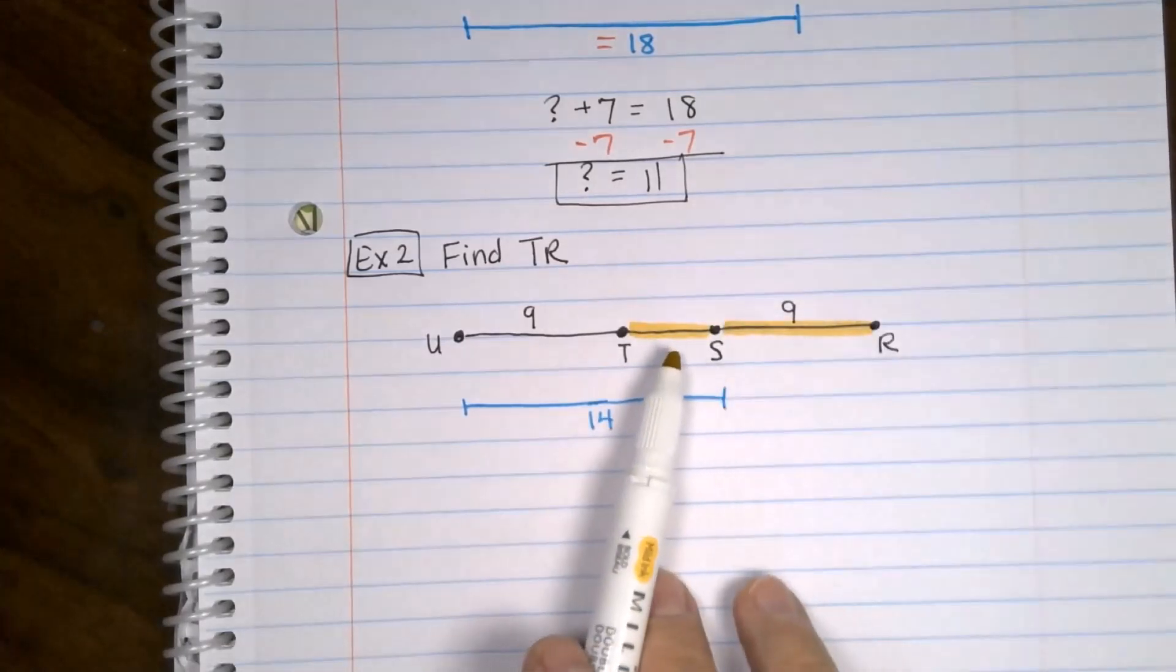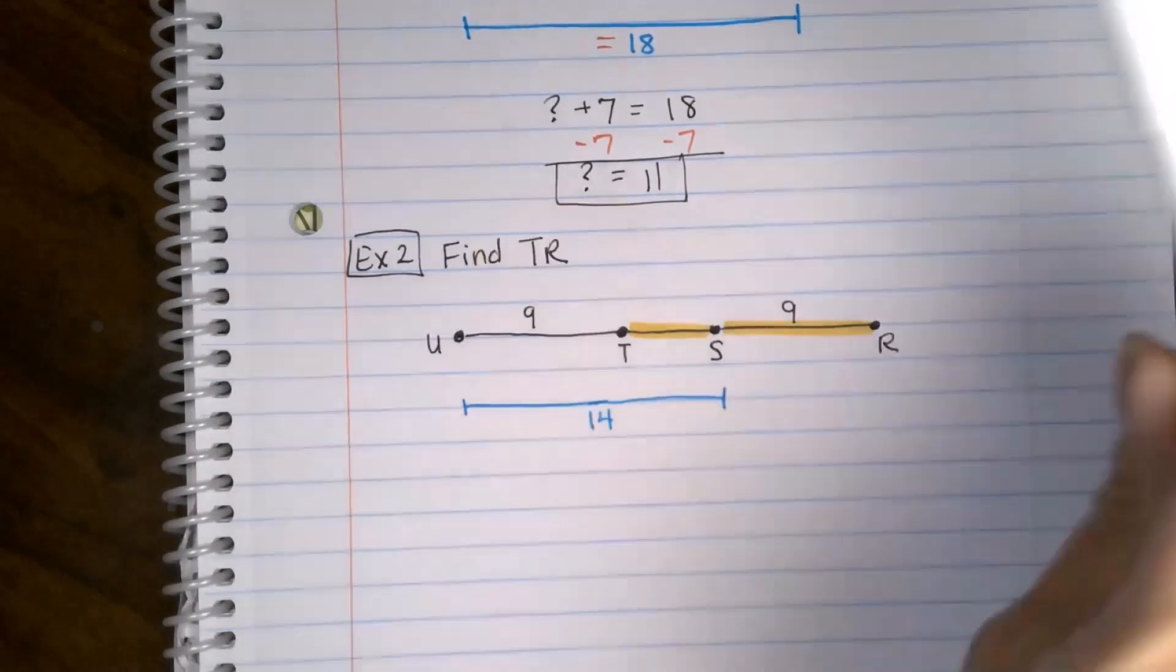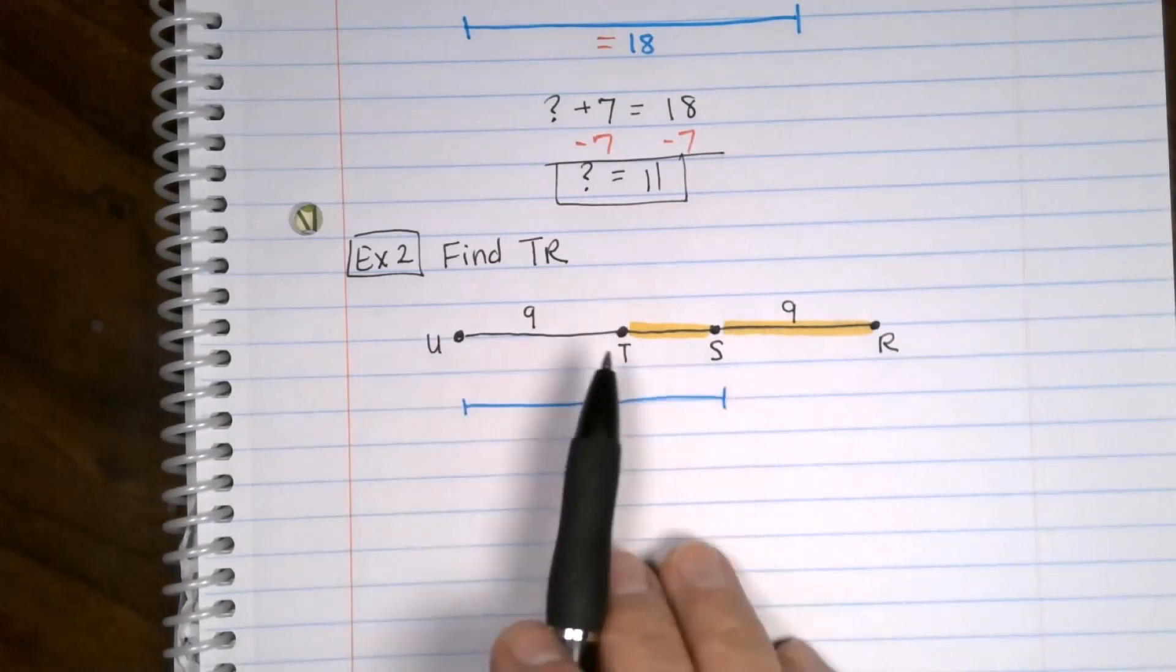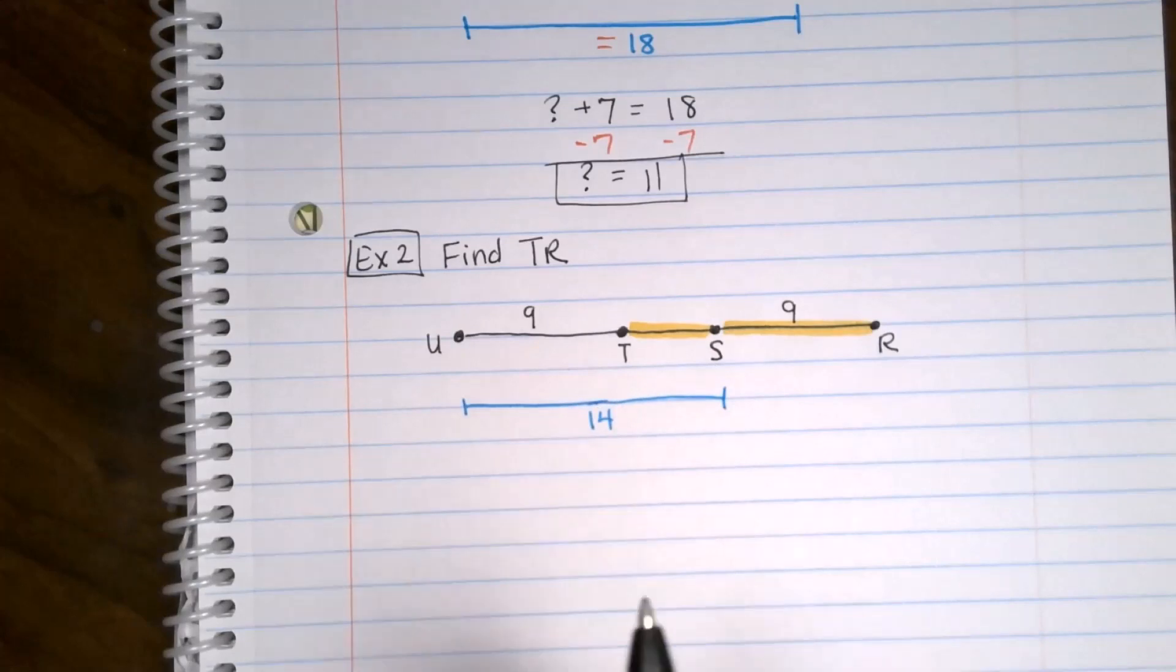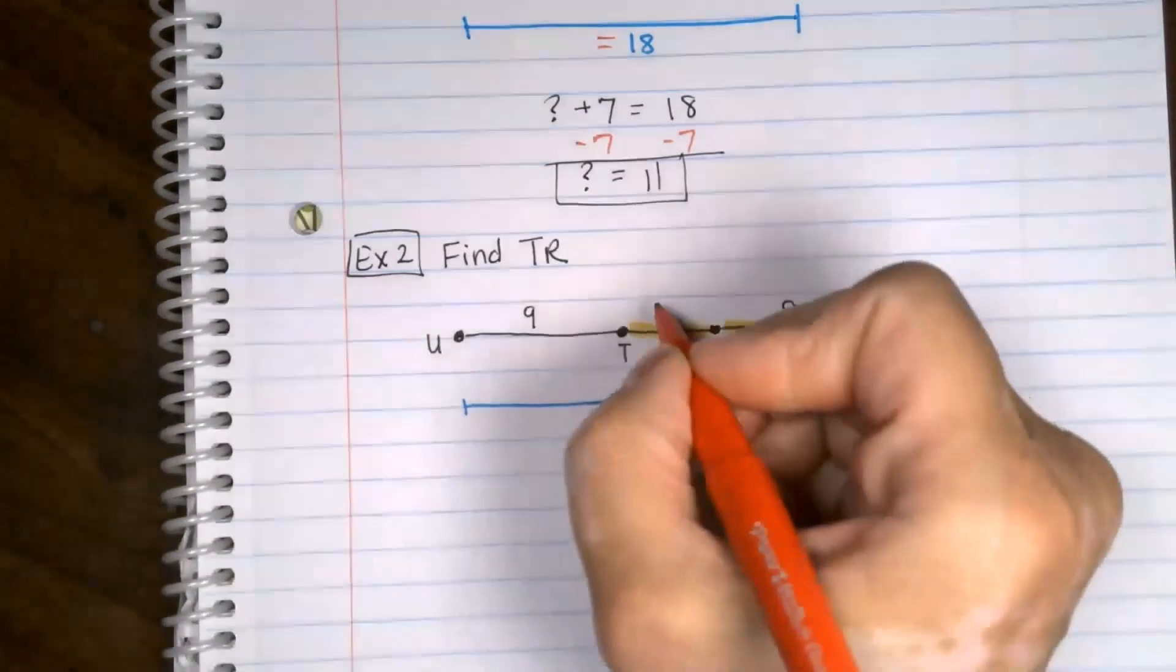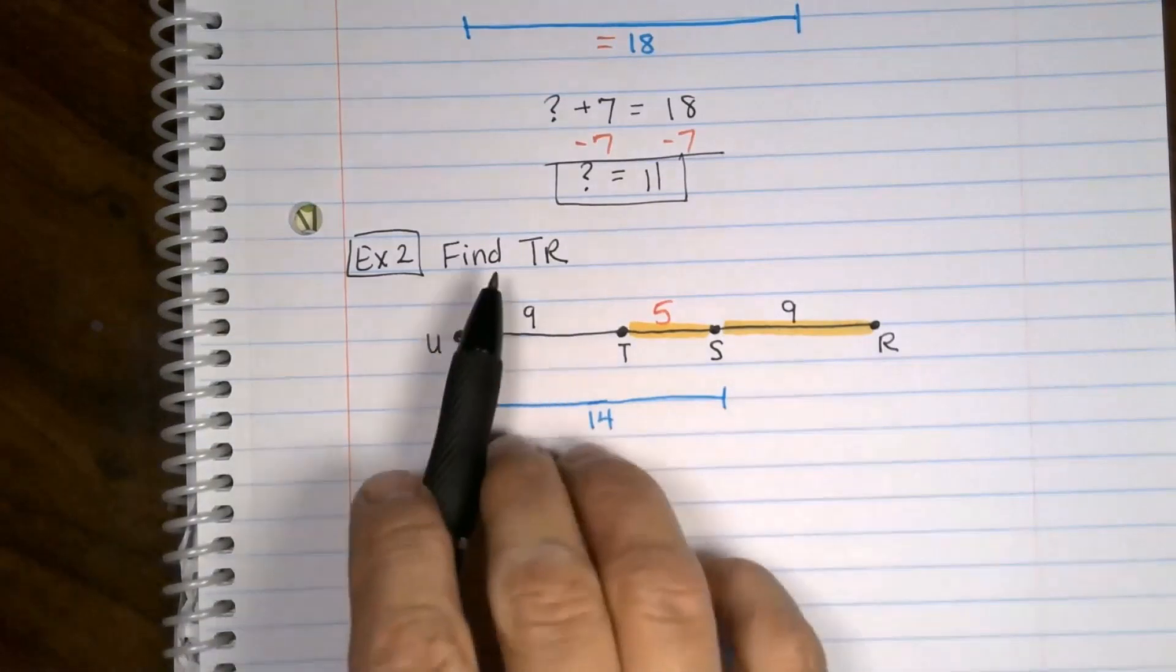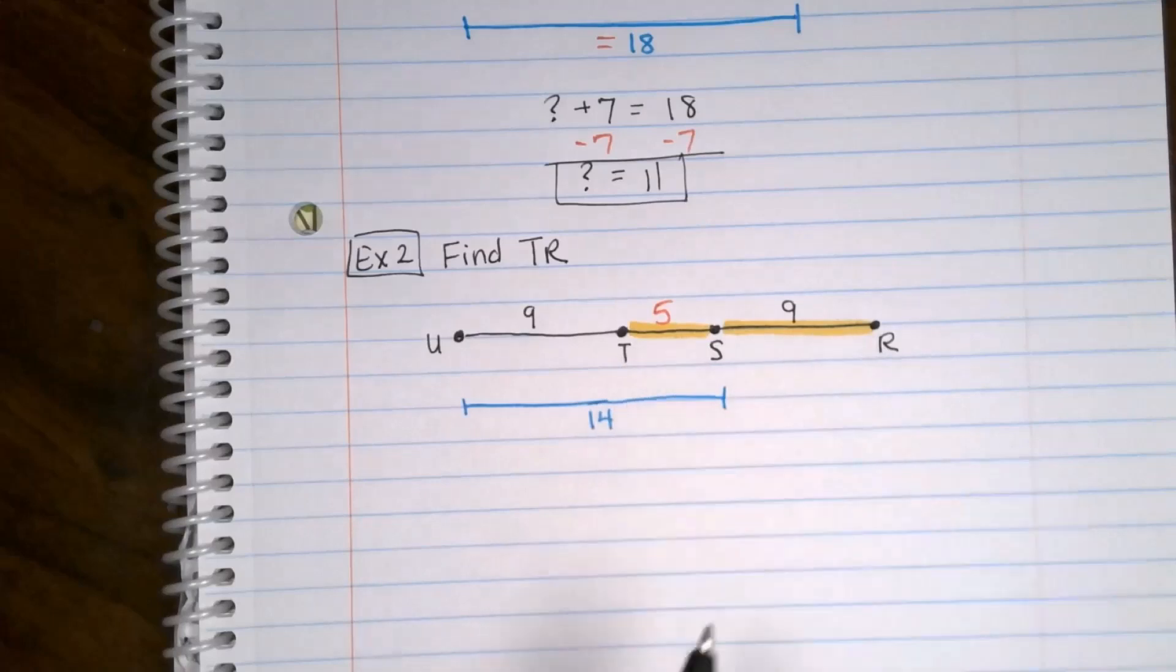So it's starting to get a little bit more complicated. What they're asking us for is TR. So that means we need this piece plus this piece. We already know this one is nine. Well, we don't have a measurement for this distance that's going from T to S. They gave us this clue down below that the whole distance is 14. And we know the first chunk of it is nine. So it's just pretty much a subtraction problem. Subtract nine from 14. So we know that this piece right here is five. Then in order to answer the problem, TR equals five plus nine.